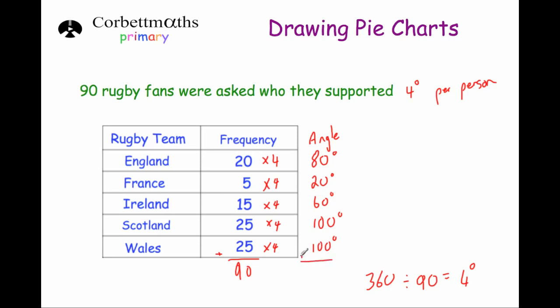To check them, we could add them up: 100, 200, 260, 280, 360. So we've added them up and checked that they add up to 360. That's great.